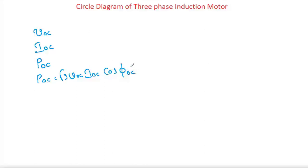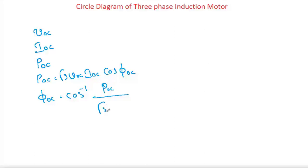Open circuit is nothing but the no-load test. From that, we want φ_OC. φ_OC = cos⁻¹ of (P_OC divided by √3 × V_OC × I_OC). These values are very much required to draw the circle diagram. This is completely from the OC test.